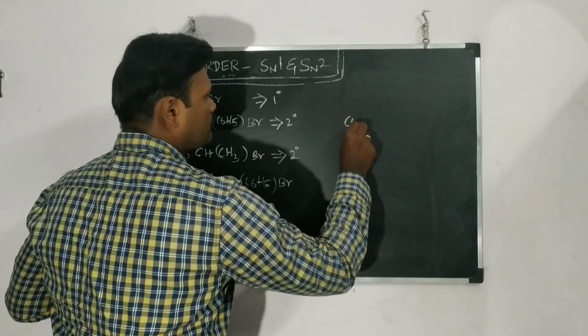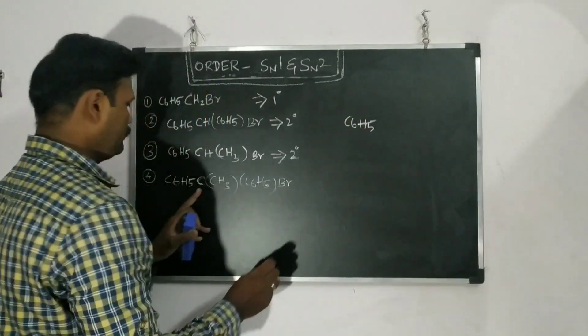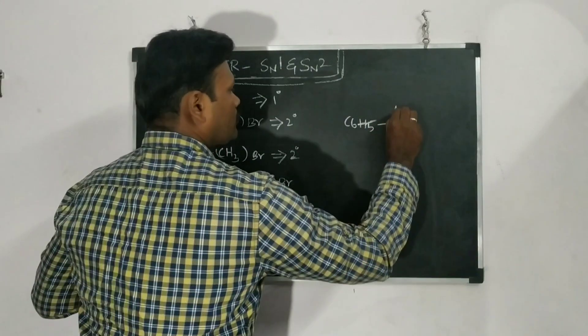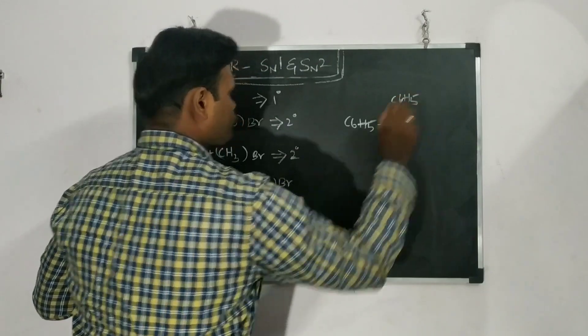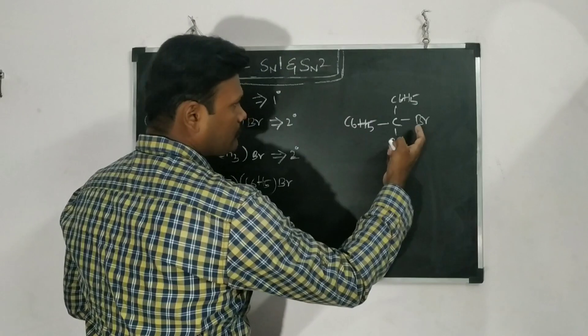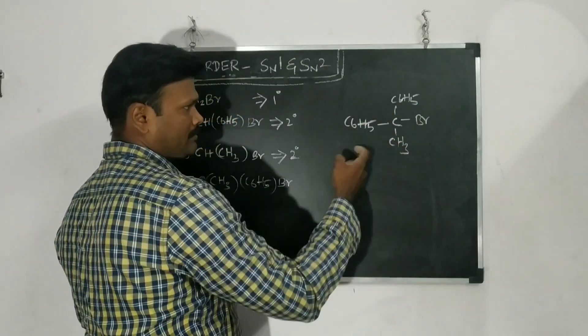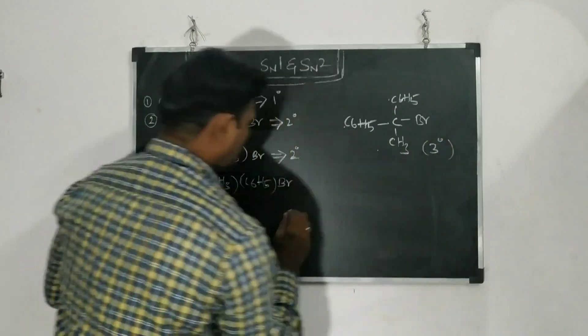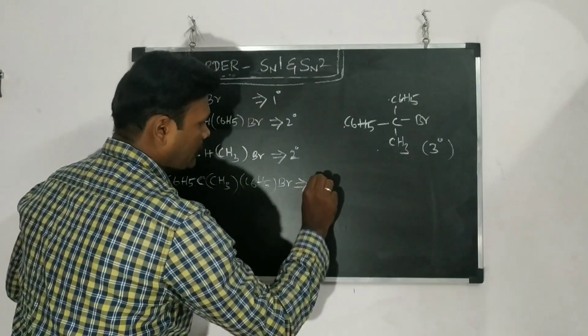So write the compound name: C6H5. And here it is C. And here it is CH3. One more C6H5 is there. And here it is Br is there. So what about the degree? So the functional group is attached to the carbon. The carbon is attached with three carbon atoms. So there it is 3 degree. Now we found out the degree of the compounds.